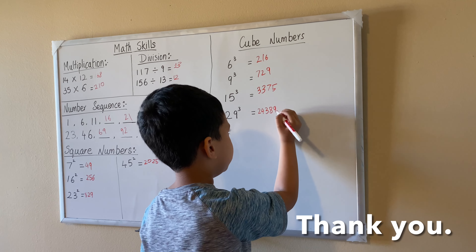Next, let's go to division. 117 divided by 9 equals 13. 156 divided by 13 equals 12.